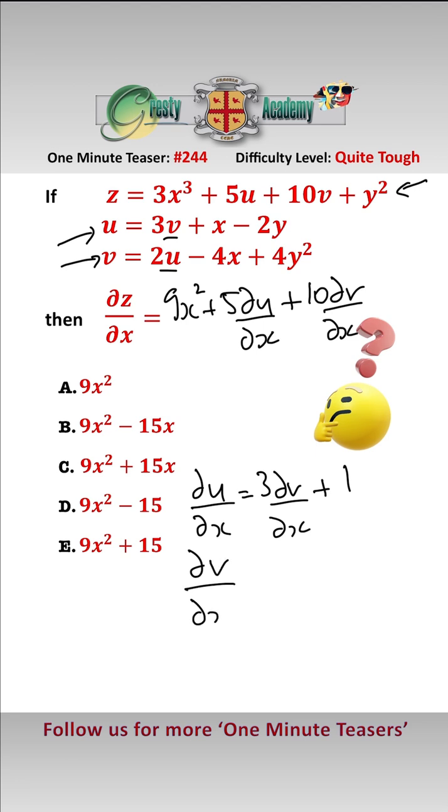And dv/dx equals 2 du/dx minus 4. Now these two equations here are basically a very simple set of simultaneous equations of the form a equals 3b plus 1 and b equals 2a minus 4.